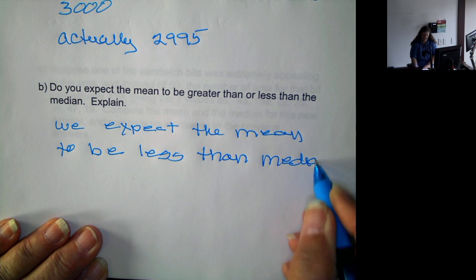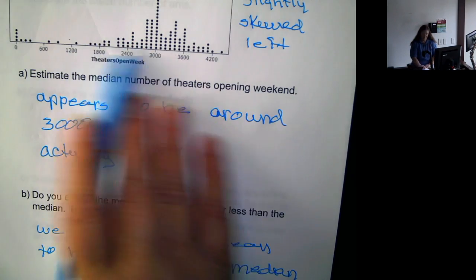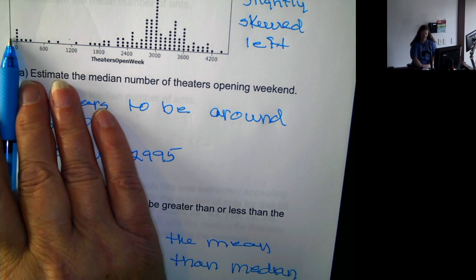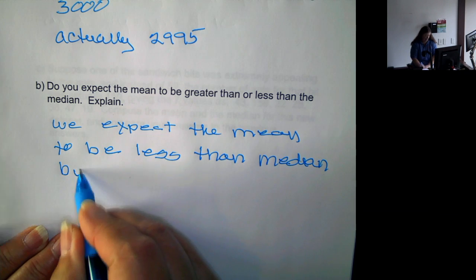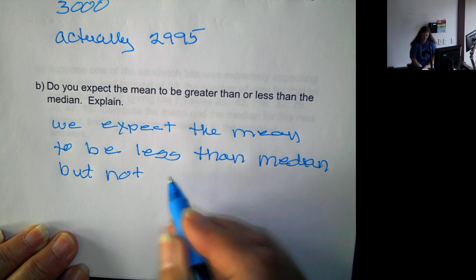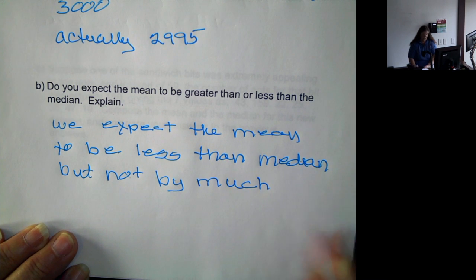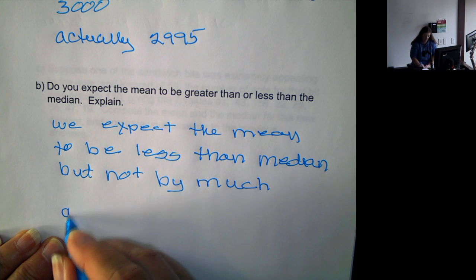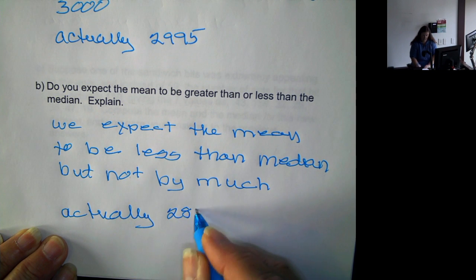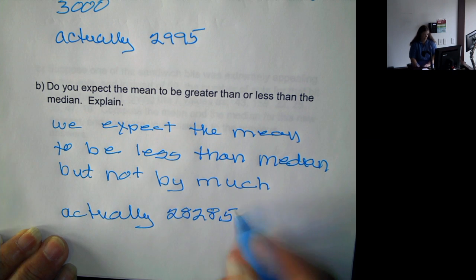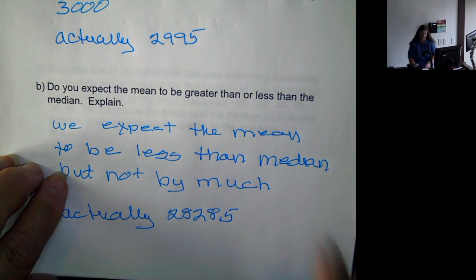But it's not going to be by much because it is kind of pulled to the left, but there are only few down there to the left. So if we actually look at the data values, the mean is actually 2828.5. So it is a little lower than the median, but not drastically so.